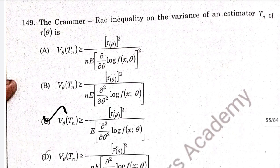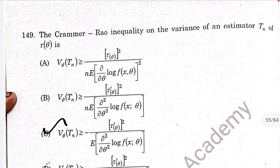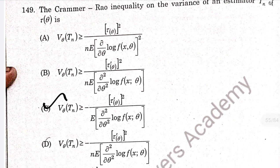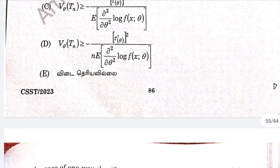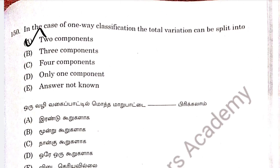Question 149, option C. Question 150: the Cramér-Rao inequality estimate. In one-way classification, the total variation can be split into two components.